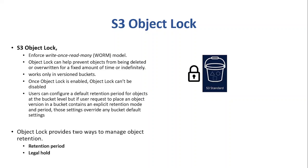Object locking in Amazon S3 is a feature that allows us to enforce a Write Once, Read Many model for S3 objects — WORM for short. It means that once you lock an object, it can't be modified or deleted for a specific retention period. It is very useful in certain use cases such as healthcare, legal documents, or regulatory requirements for any industry. It works only on versioned buckets and once object locking is enabled, it can't be disabled.